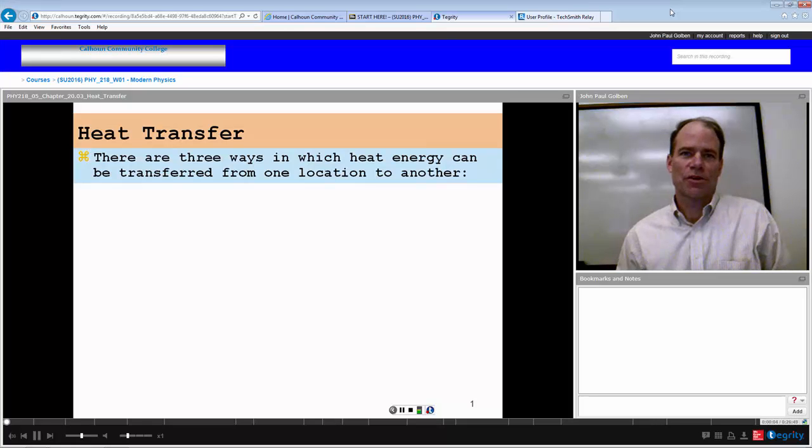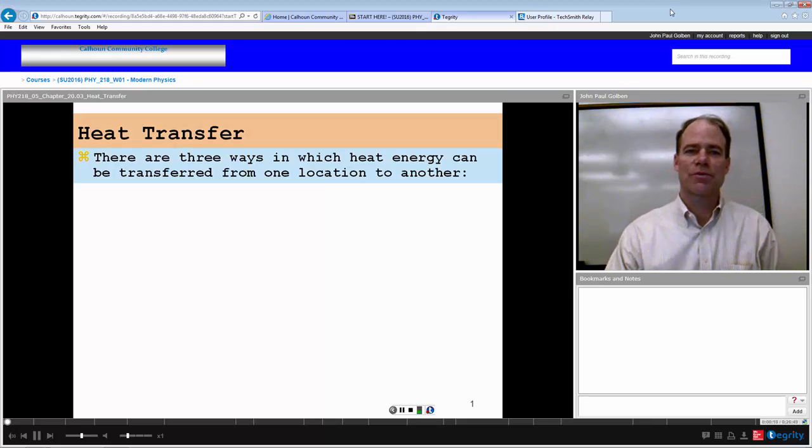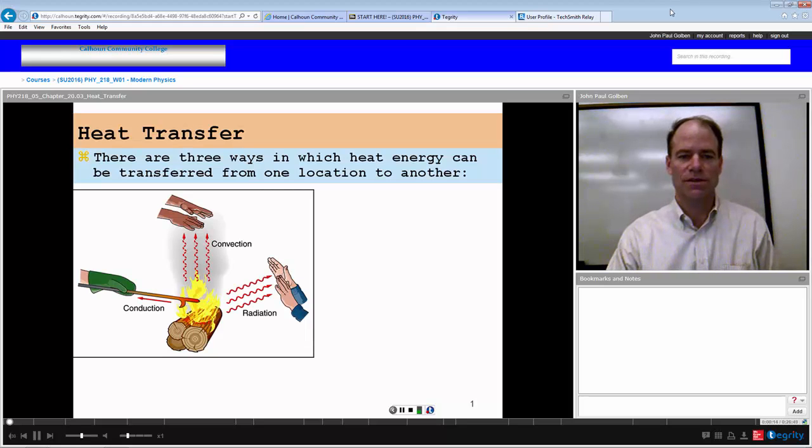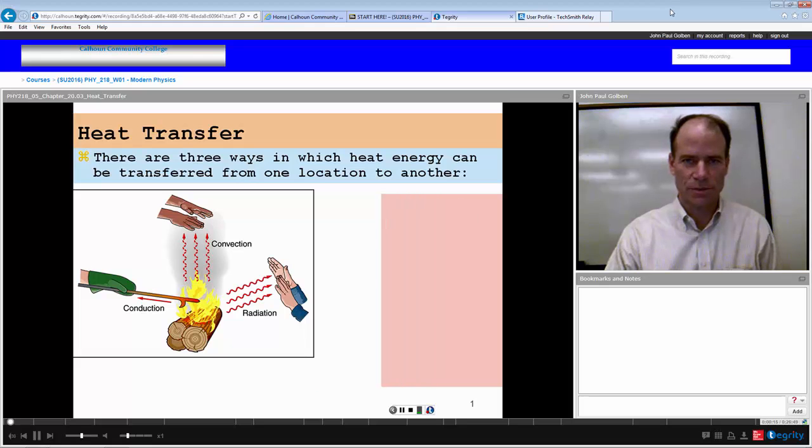This is the third video of Chapter 20, dealing with the kinds of heat transfer that we can have. There are three ways in which heat energy can be transferred from one location to another, and they're all illustrated in this picture here.